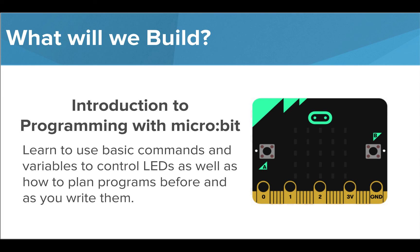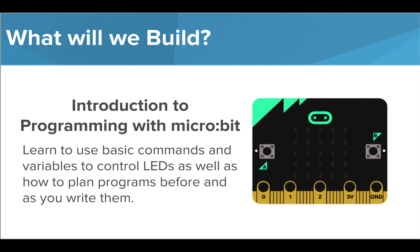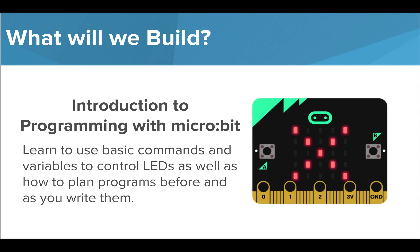In the first module, we'll go through the basics of our microbit, such as how to light up and change the brightness of LEDs, and learn how we can use variables to make our programs more versatile. We'll build our first circuits to control external LEDs with our microbit, and explore how we can use pseudocode to structure our programs from the start, and comments to make our programs readable to us and others.